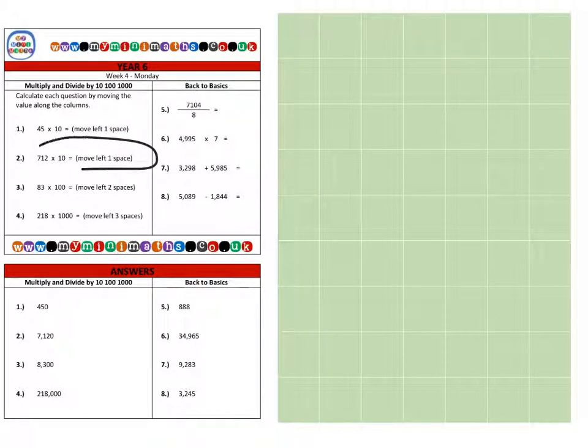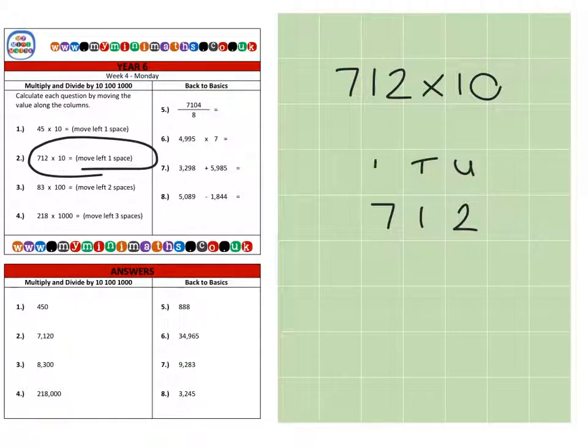Next we're on to question two, which is 712, and we're multiplying that by ten. So this time, if I write my number out, 712, I have units, tens, hundreds.